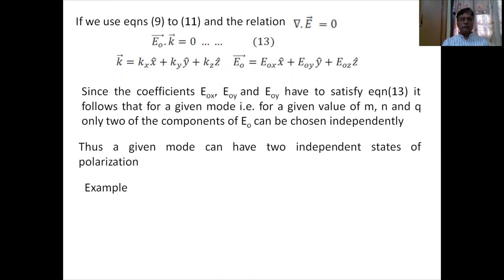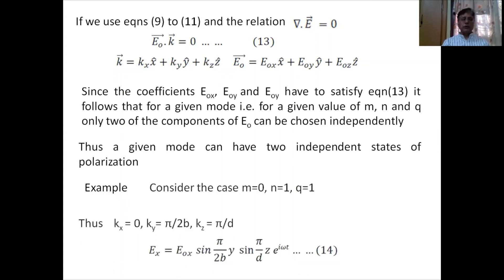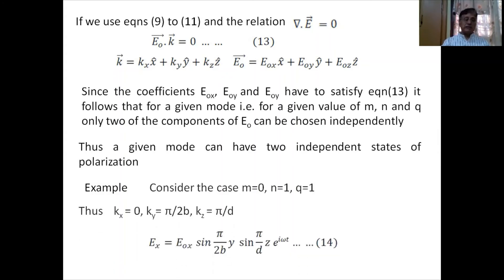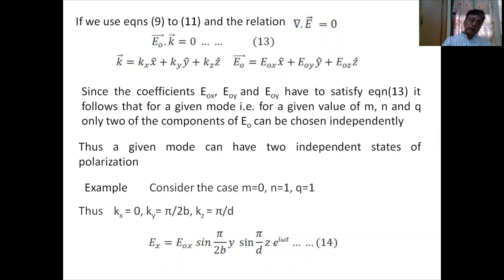As an example, consider M=0, N=1, Q=1. Then kx=0, ky=π/2B, kz=π/D. With M=0, the Ey and Ez components vanish, and only Ex survives: Ex = E0x sin(πy/2B) sin(πz/D) e^(iωt), with Ey=0 and Ez=0.